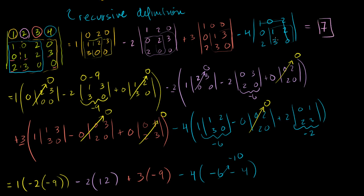The one useful takeaway: we know that this matrix is invertible because it has a non-zero determinant. Hopefully you found that useful.